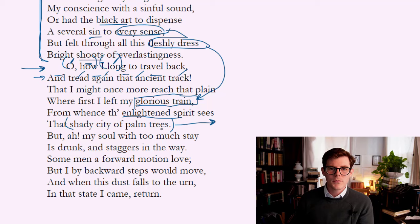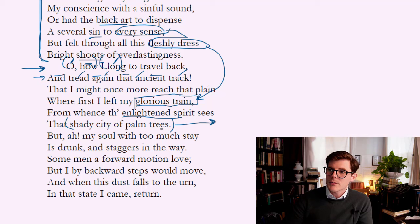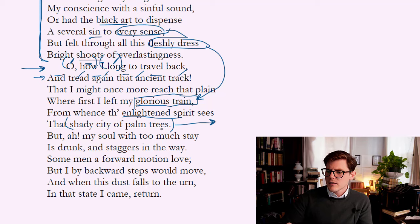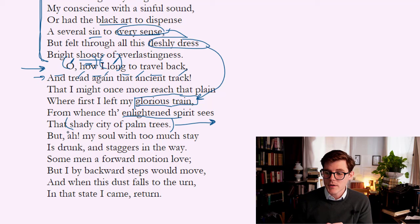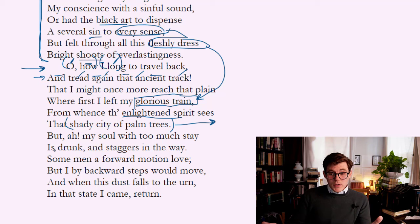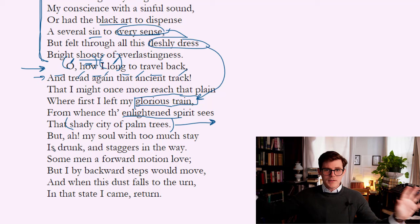That early state — that plain — is where the enlightened spirit can see the shady city of palm trees. This is how Old Testament imagery, read through the lens of Christian hermeneutics and typology, becomes absorbed into the poetic structures underlying English poetry. The shady city of palm trees could reference Jericho of the Old Testament, but most likely references Moses at the end of Deuteronomy, at the end of his life, when God says 'I will not allow you to go into the promised land, but I will let you see it from afar.' He climbs the mountain and sees the promised land. It's also speaking of Eden, the idea of Jerusalem, even the New Jerusalem — looking back and looking forward at the same time.